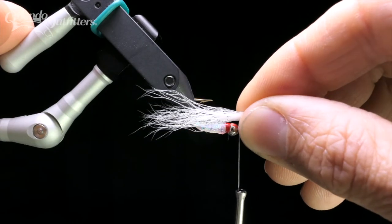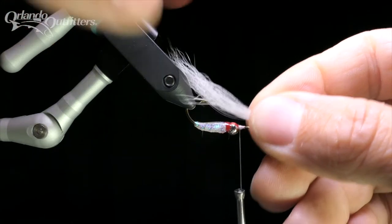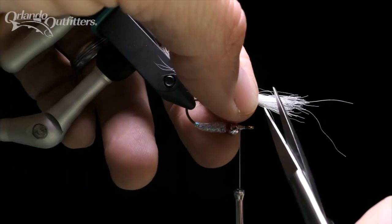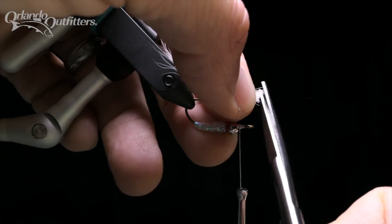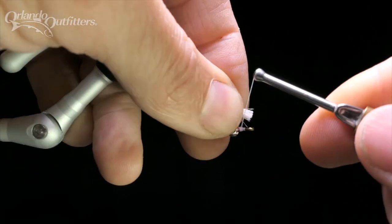Measure the calf tail so it extends one and a half to two times the hook length past the tie-in point. I prefer to cut the butt ends off before tying it in. Tie the calf tail in between the bead and the eye of the hook on the point side of the hook.